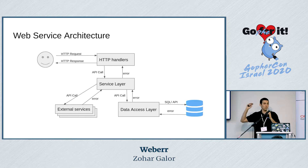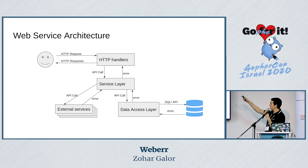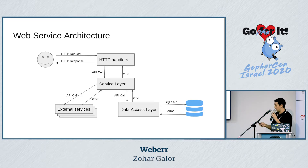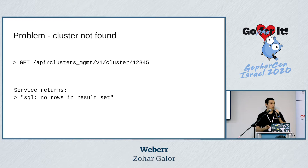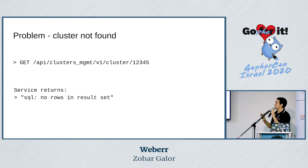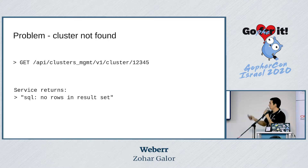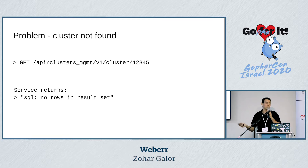In the example where we try to get a cluster — assume this cluster does not exist — the request will go all the way down to the database, and the database will return an error that the cluster is not found. What the service returns is 'SQL: no rows in result set'. There are a few problems with that error message. For one thing, this goes to the user — we don't want our user to know we're using SQL. Second, 'no rows in result set' has no context of cluster or anything meaningful.